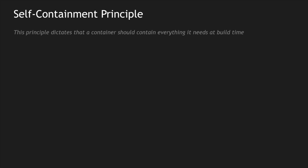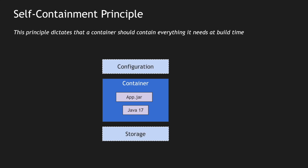The sixth one is the self-containment principle. It states that a container should contain everything it needs at build time. For example, if I have a container with app.jar, I have Java 17 with it. I do have configurations and storage required at runtime, but during build time I need only the app.jar and Java 17. Runtime requires configuration and storage in addition. This applies to Linux libraries or core dependencies — in our case Java 17 is bundled at build time and used at runtime. You cannot change the Java version or underlying dependencies used at build time. At runtime, you can leverage platform-specific configurations — for example in Kubernetes you can use ConfigMaps and storage volumes to attach to the container at runtime.